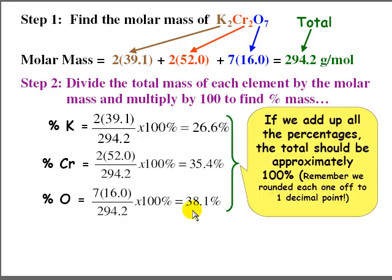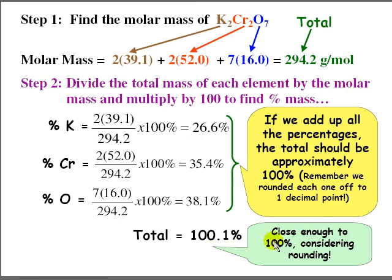Now we want to check our results. If we add up all these percentages, the total should be approximately 100%. It may not be, because remember we rounded each one off to one decimal place, and sometimes in the rounding we lose a little bit of our precision. If we add these up, we end up with 100.1, which is totally close enough to 100 considering the rounding that we did.